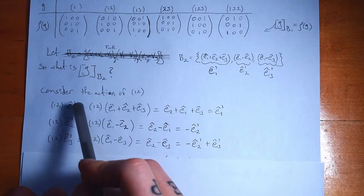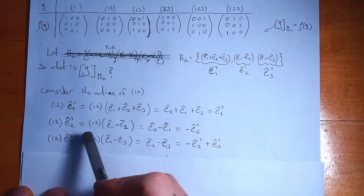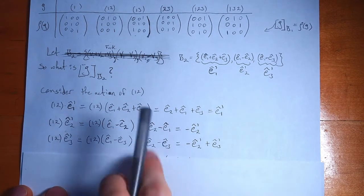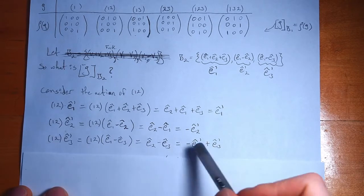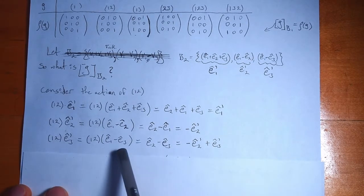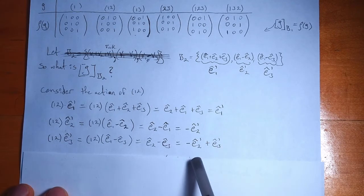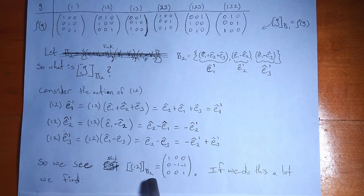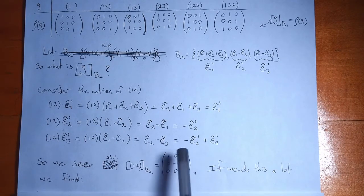For e_2' = e_1 − e_2, applying (1,2): 1 gets sent to 2, 2 gets sent to 1, so we get e_2 − e_1, which is −e_2'. So the action of (1,2) on e_2' is multiplication by −1. For e_3' = e_1 − e_3, applying (1,2): 1 gets sent to 2, 3 stays the same, so we get e_2 − e_3, which equals e_3' − e_2'. Writing this as a matrix: e_1' gets sent to itself, e_2' gets sent to −e_2', and e_3' maps to −e_2' + e_3'.